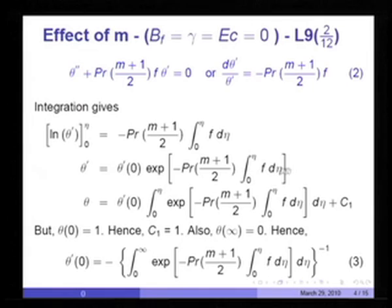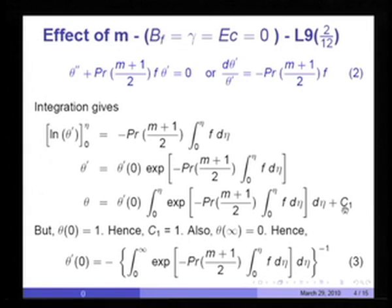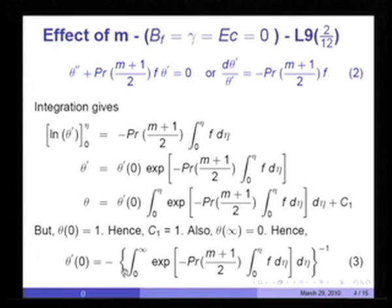Integrating once again, theta equals minus theta prime(0) times the integral from 0 to eta of the exponential quantity d eta, plus a constant of integration C1 determined from theta(0) equal to 1. Applying the boundary condition at infinity — theta(infinity) equal to 0 — the integration becomes from 0 to infinity, giving theta prime(0), which represents the Nusselt number, equal to the inverse of the integral from 0 to infinity of the exponential expression.